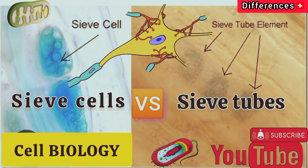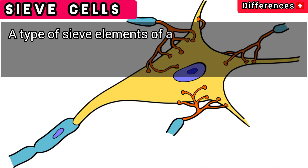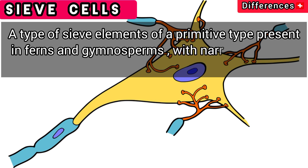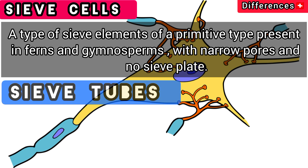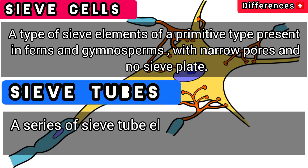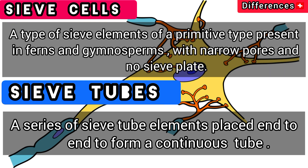In this video we will explain what is the difference between sieve cells versus sieve tubes. Sieve cells are a type of sieve element of a primitive type, present in ferns and gymnosperms, with narrow pores and no sieve plate. Sieve tubes are a series of sieve tube elements placed end to end to form a continuous tube.